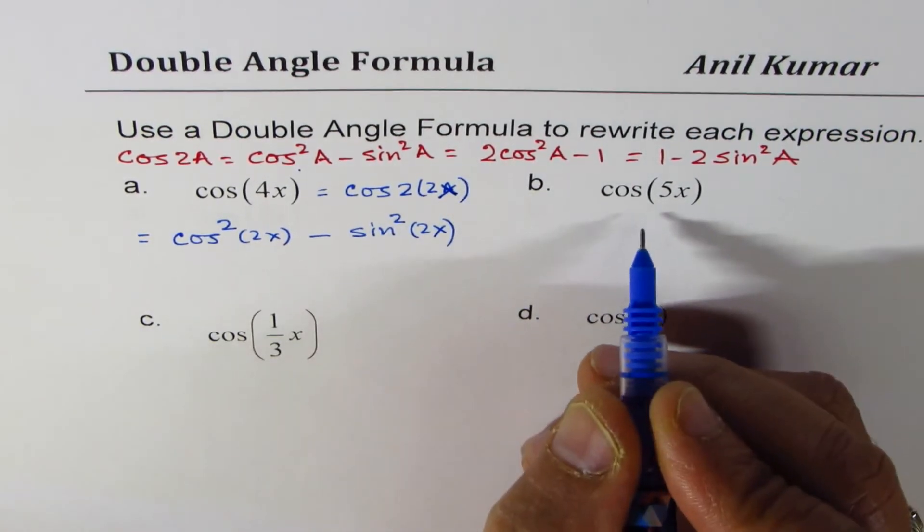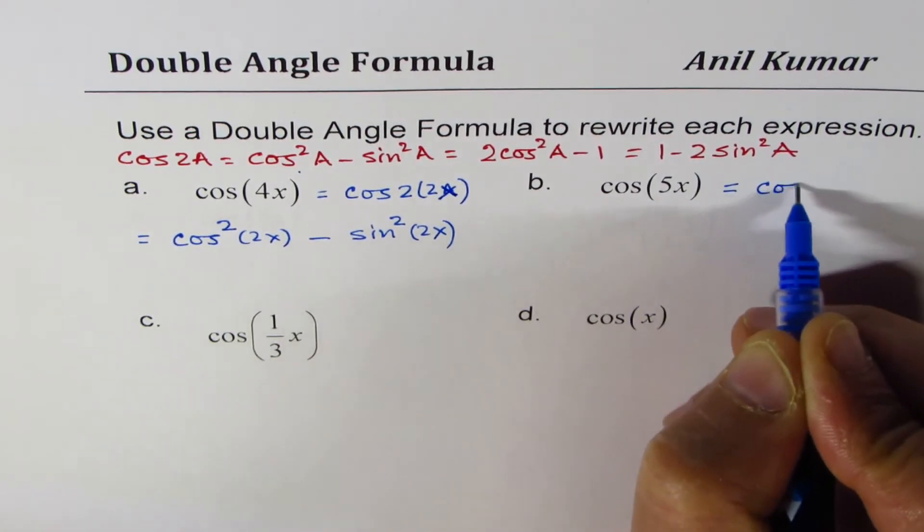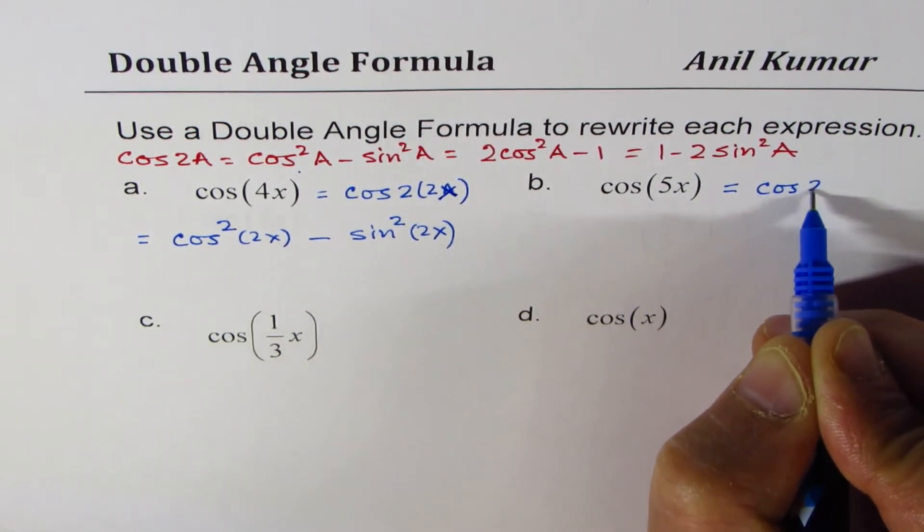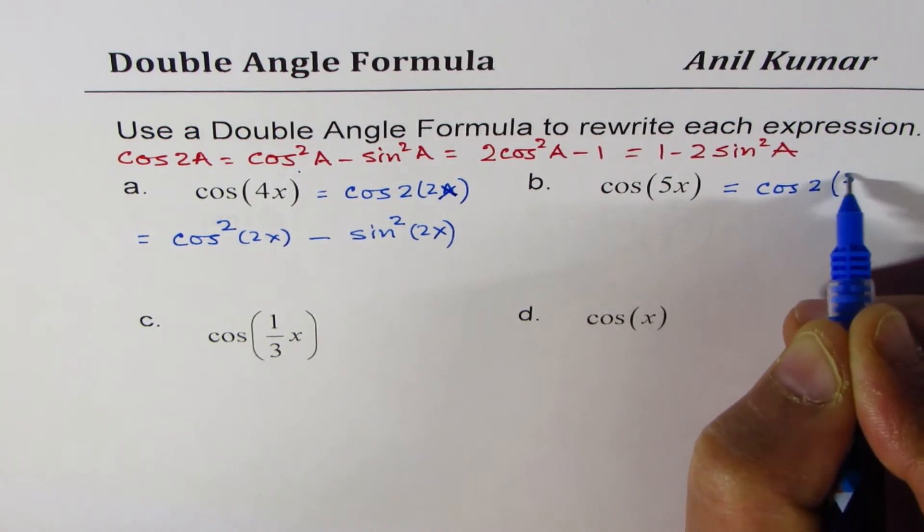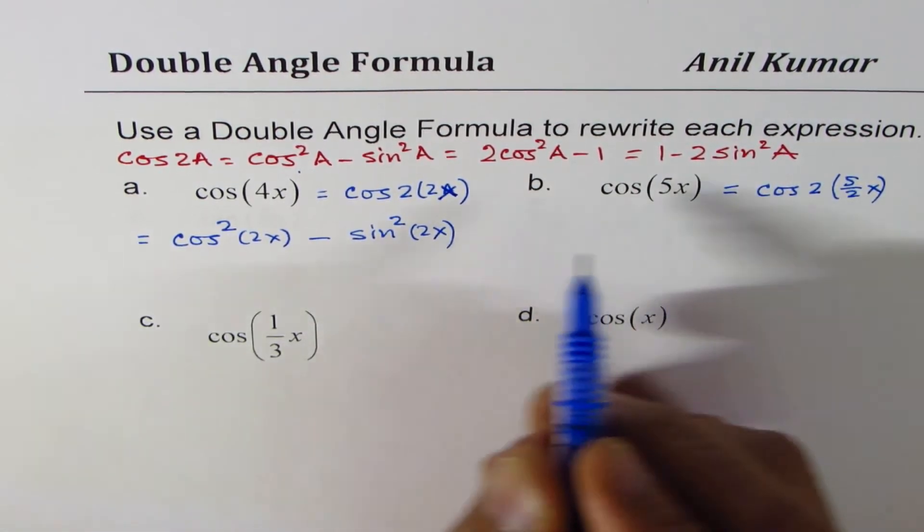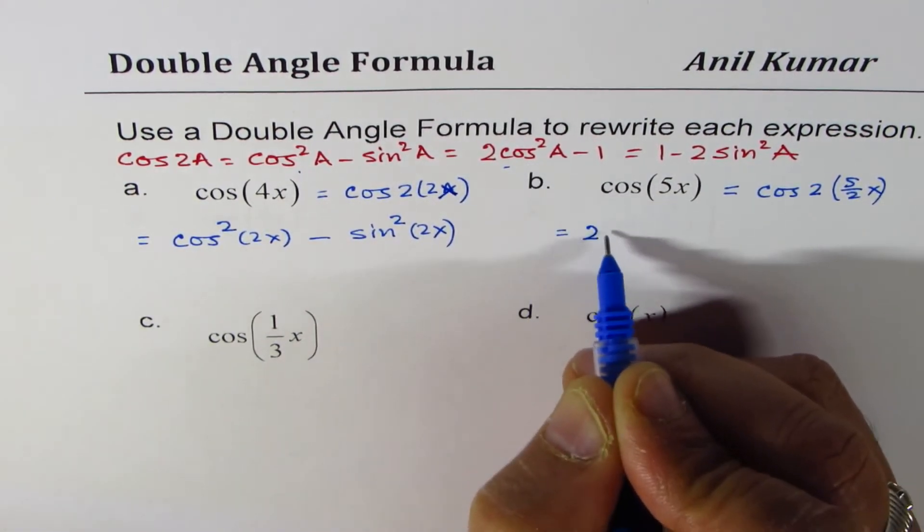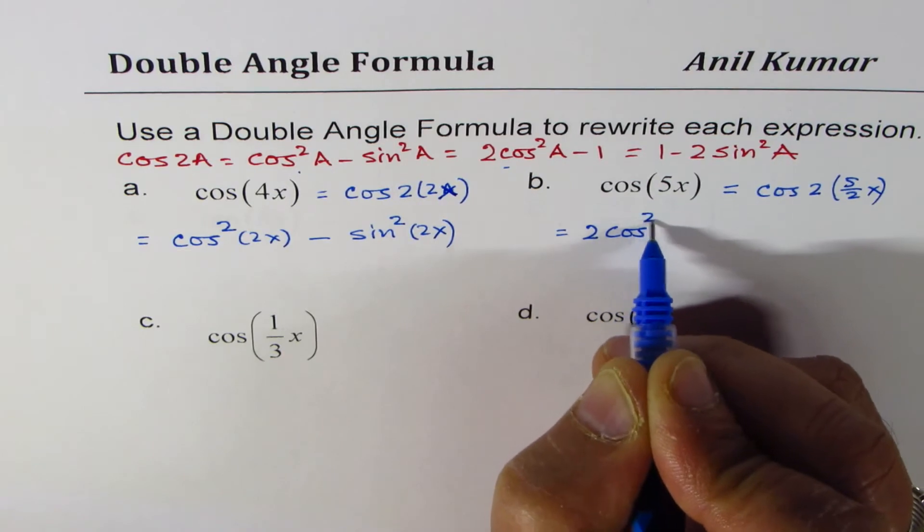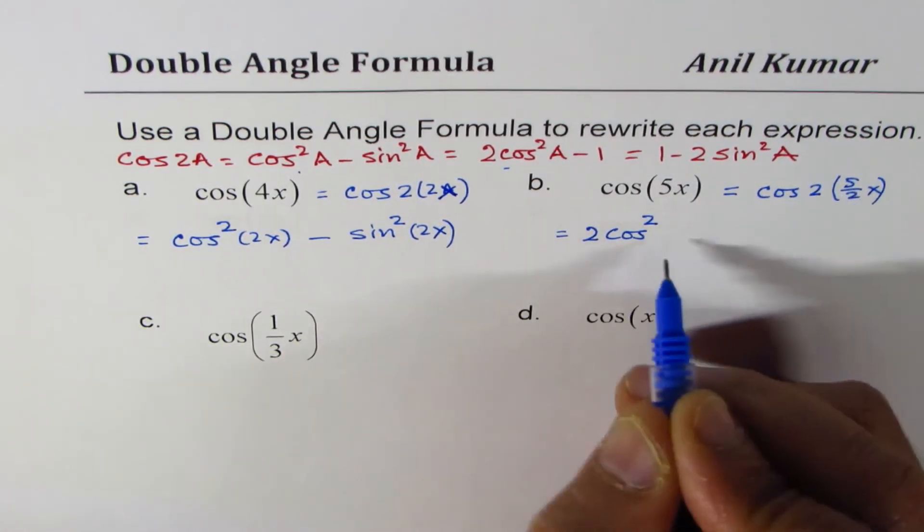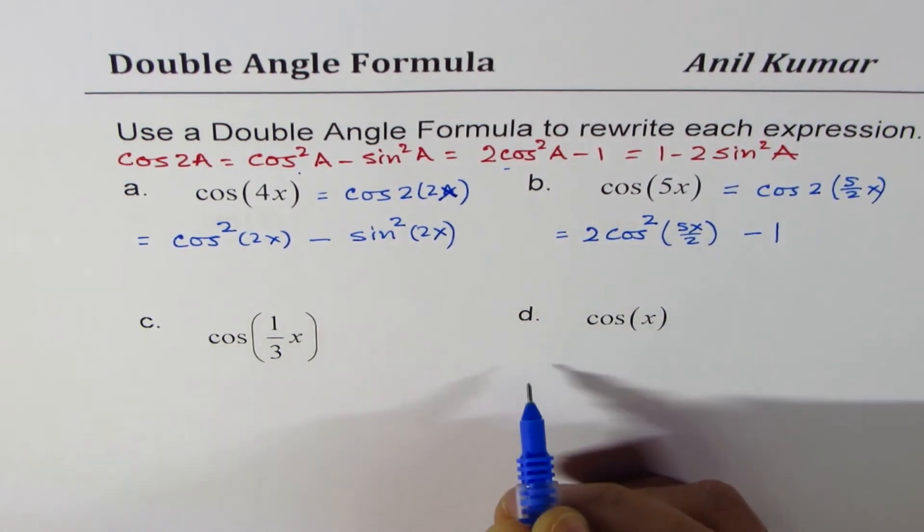Now, in this example, which is cos of 5x, I can write this as cos of 2 times 5 over 2x. Let me use the second formula this time, which is twice cos square 5x over 2 minus 1.